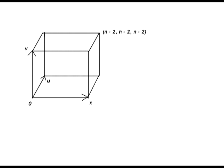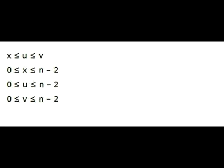We see in this diagram the cube with edge length n minus 2 in the new coordinates x, u, v. All the points of our region with restrictions x not greater than u and u not greater than v belong to this cube.